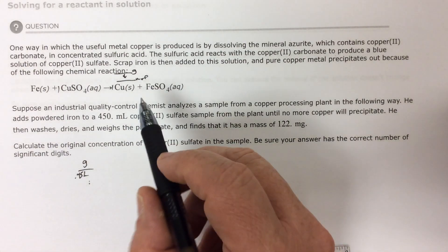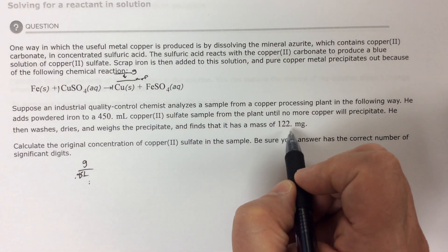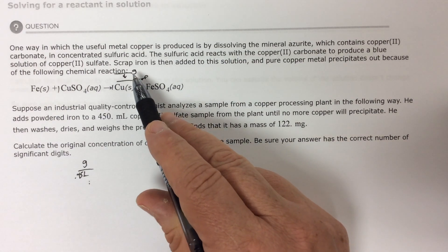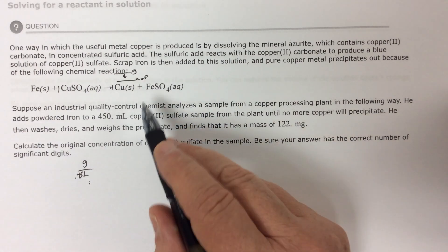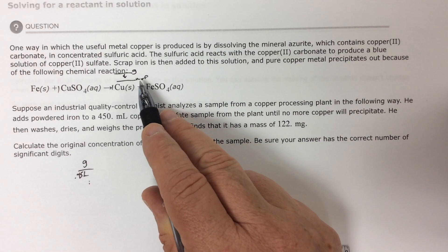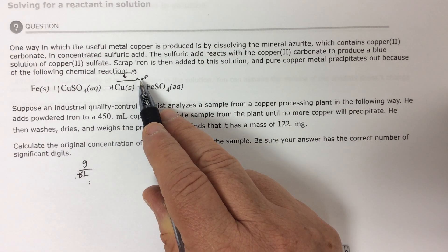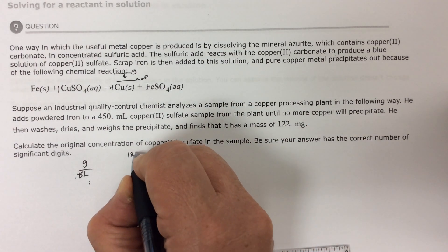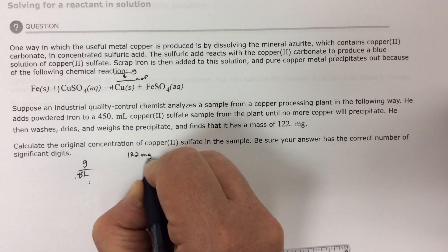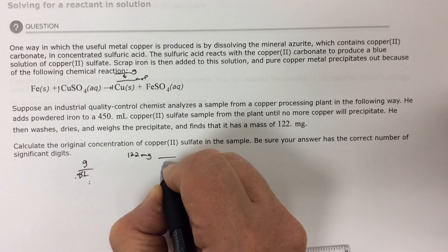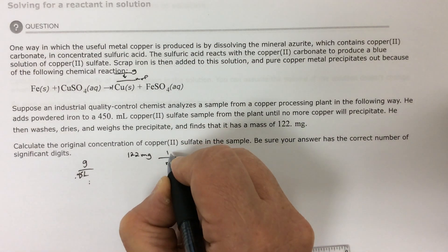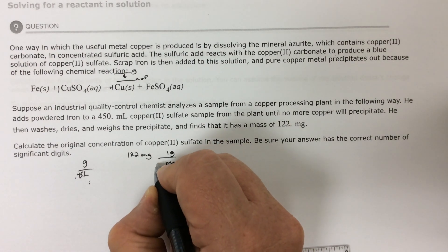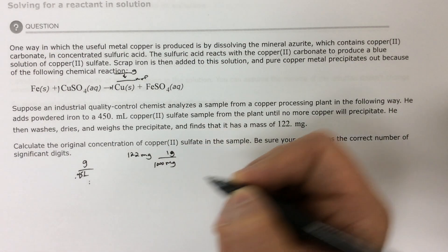Okay. So I'm given 122 milligrams. So to go through the periodic table, I need grams because the atomic masses are in grams per mole. So let's start first with 122 milligrams. And in one gram, there are a thousand milligrams.